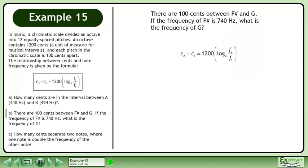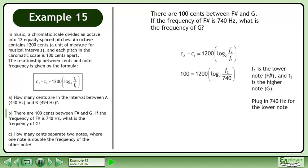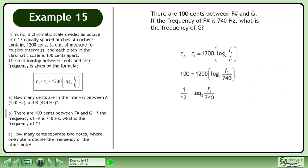Rewrite the cents formula. F1 is the lower note, F-sharp, and F2 is the higher note, G. Plug in 740 Hz for the lower note. Divide both sides by 1200. Convert to exponential form. The frequency of G is 784 Hz.